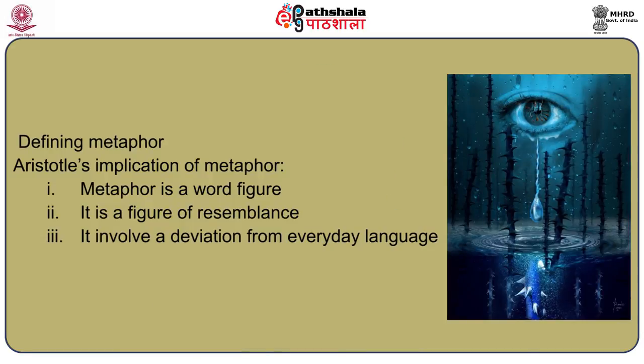There are three implications of Aristotle's definition: one, metaphor is a word figure; two, it is a figure of resemblance; three, it involves a deviation from everyday usage. This definition subsumes metonymy and synecdoche, with the property of transference of meaning being common to all three figures. Most modern definitions of metaphor focus essentially on resemblance or similarity and often club it with simile. Where a simile compares two items, a metaphor directly equates them and does not use 'like' or 'as'. Metaphor is thus a figure of implied comparison, as against simile which has explicit comparison.